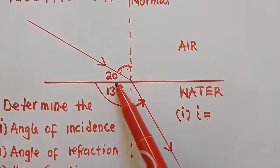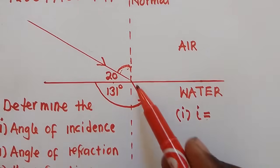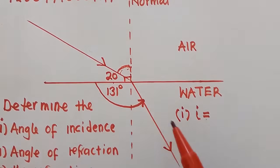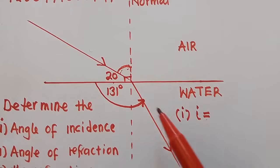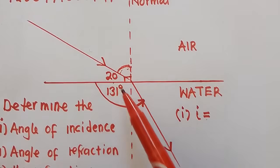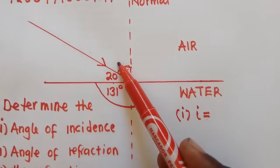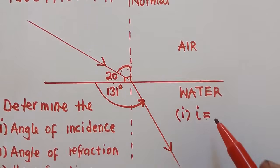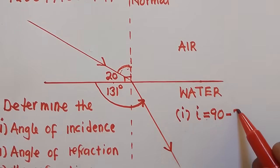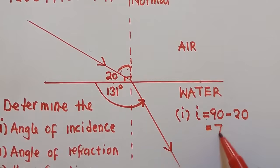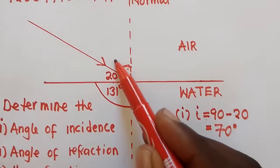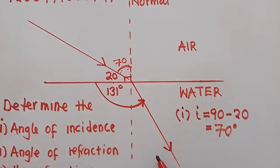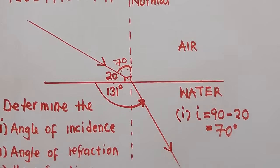We are given 20 degrees between the surface and the incident ray. Since the surface and the normal make a right angle adding up to 90 degrees, these two angles must add to 90. So we say 90 minus 20, which gives us 70 degrees. Therefore the angle of incidence is 70 degrees.